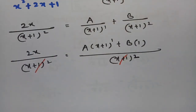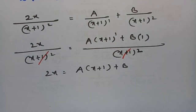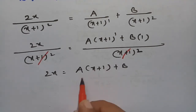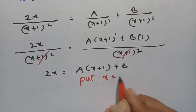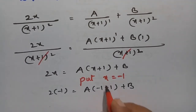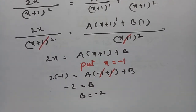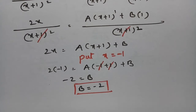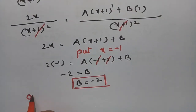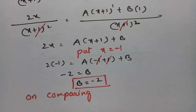To find B, substitute x = -1: 2(-1) = A(-1+1) + B, so -2 = A(0) + B, therefore B = -2. After getting the B value, the highest degree term is x, and we compare x coefficients on both sides to find A.